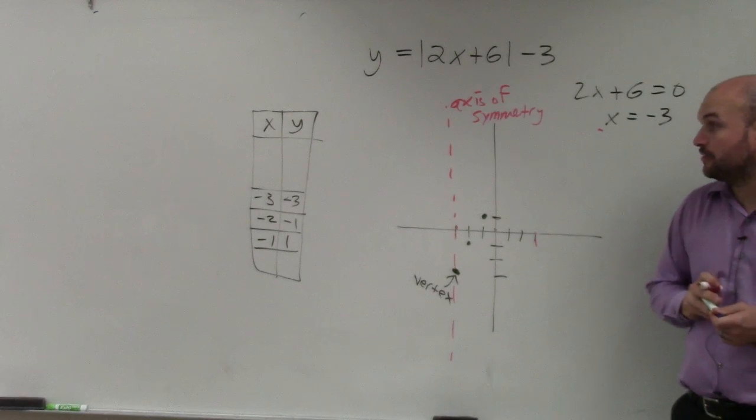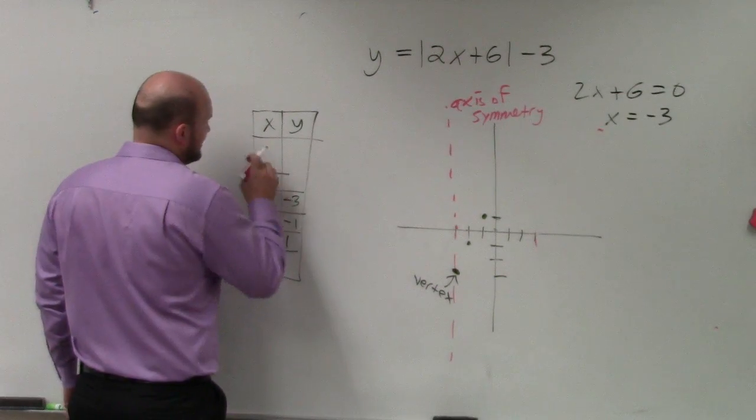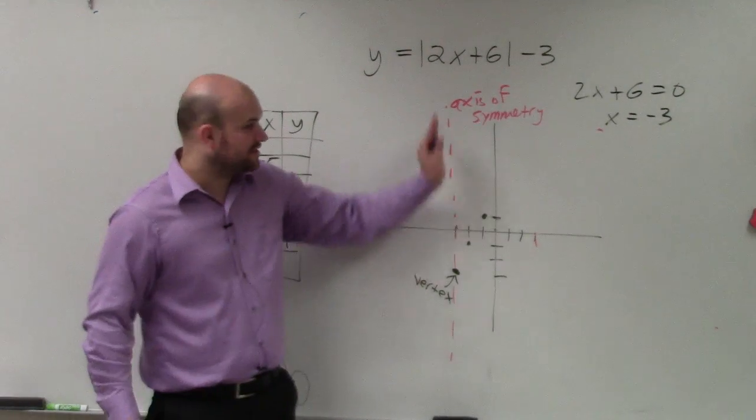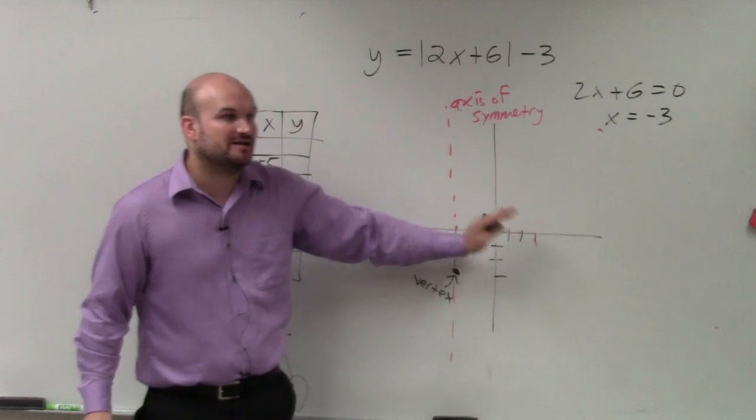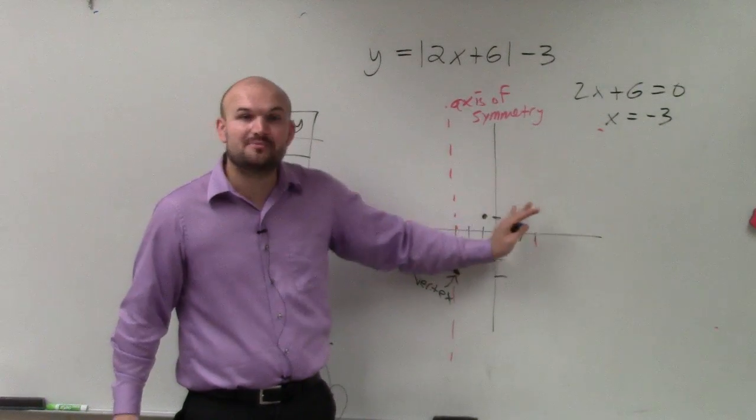Now, you guys could also do the points to the left. So you could do negative values. But let me give you guys a little tip. Remember, this is the axis of symmetry. Whatever points are on the right are going to be the exact same points on the left. Whatever points are on the left are going to be the exact same points on the right.